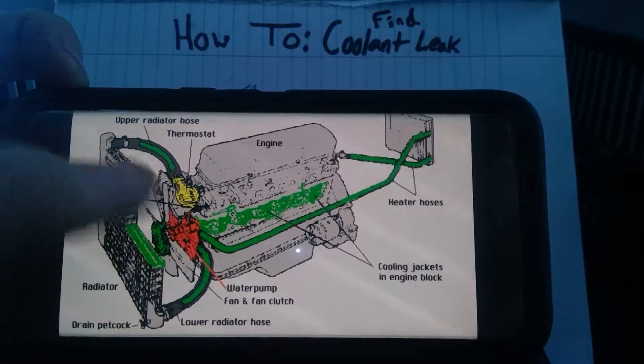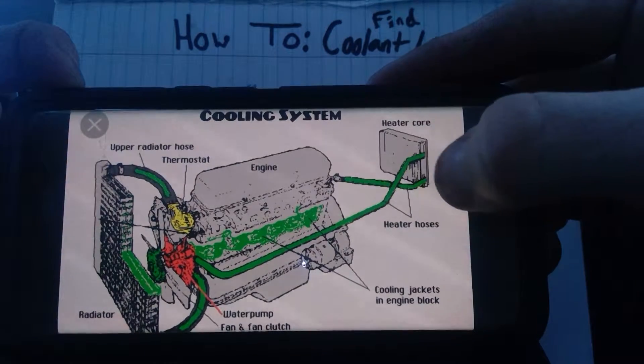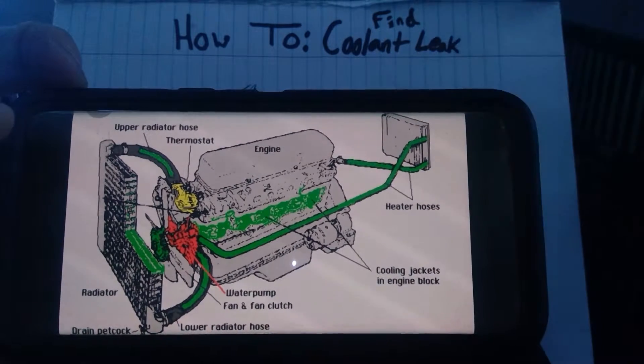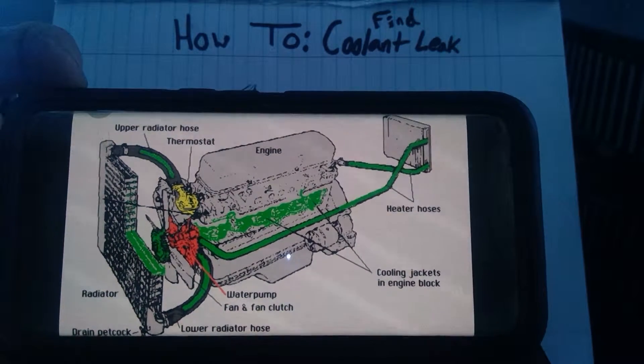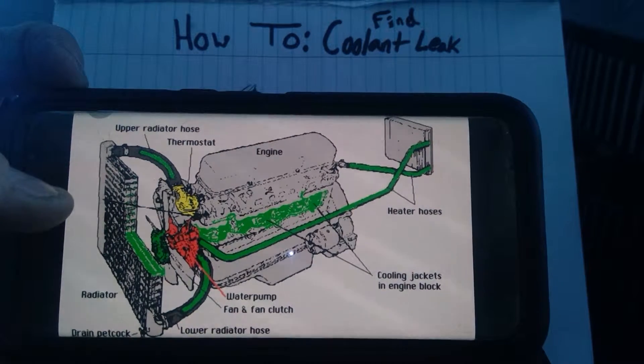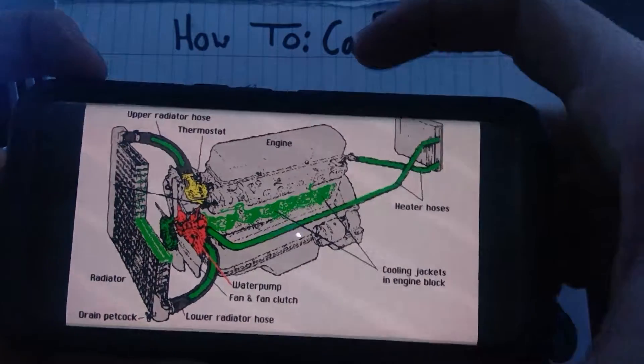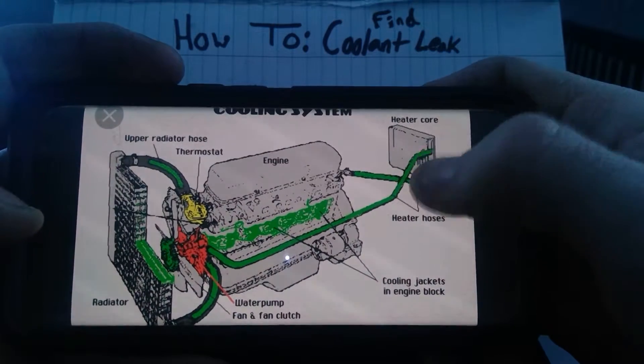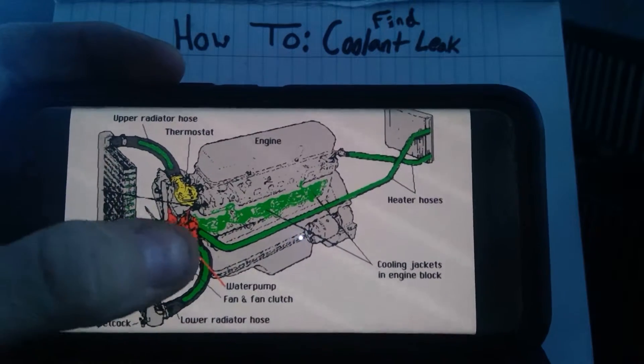Now over here, the heater core. If the inside of your cab, your cabin where you're seated, smells like coolant inside when the heat's on, that's most likely the heater hoses or the heater core leaking inside. Especially if floor mats are wet, that's a surefire way to tell that the heater core is bad.